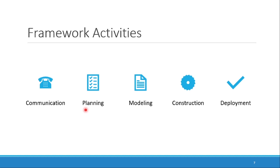Then we have to design our complete system — architecture, network, deployment, and components. Then construction — we construct, implement, and if there is hardware, we handle hardware manufacture. And in deployment, we simply deploy our particular system. So these are the framework activities, which are the activities we need to create a software system.